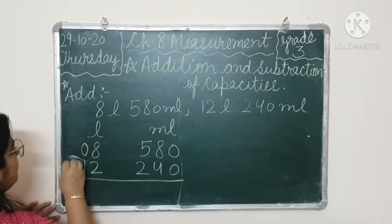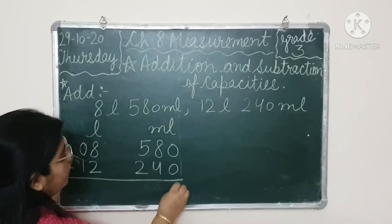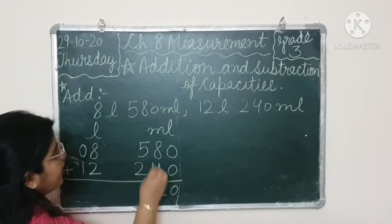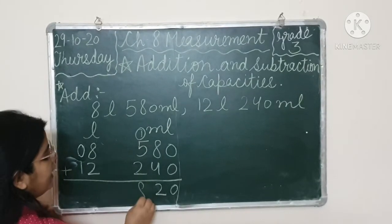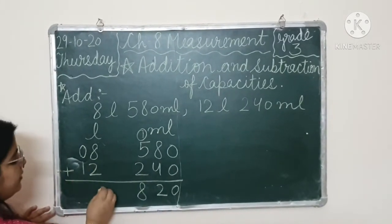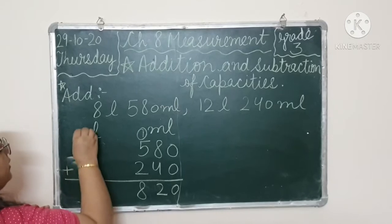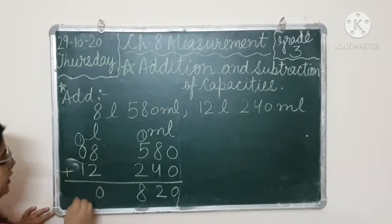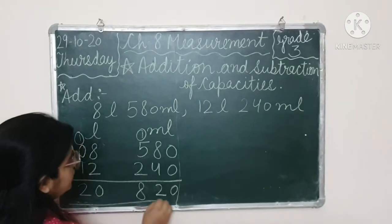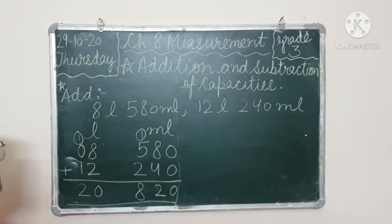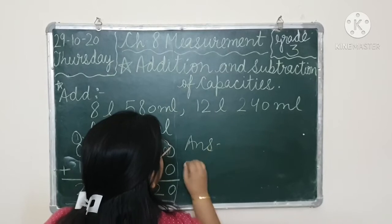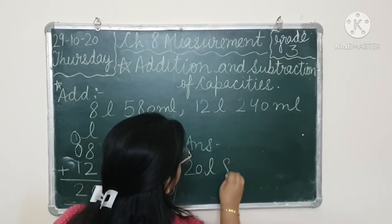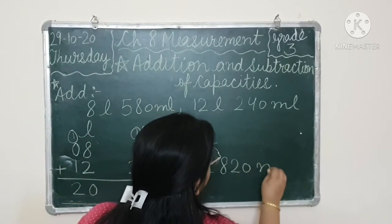Then we add. 8, 0, 8. 4, 12, 2 here, 1 carry over here. 5 to 7 and 1, 8. 8 or 2, 10. 10 and 0 here, 1 carry over here. 1 and 1, 2. So, we have 20 liters, 820 milliliter. So, our answer is 20 liters, 820 milliliter.